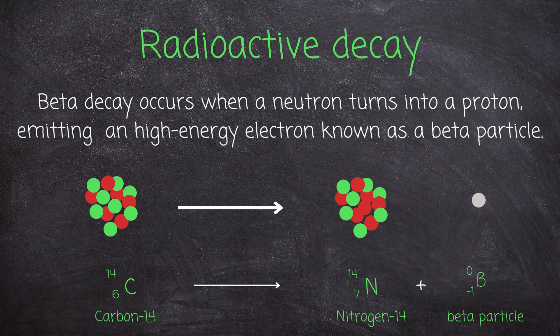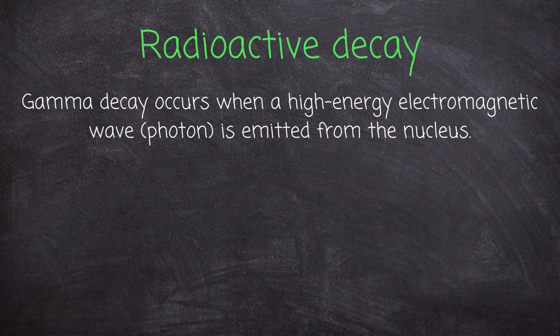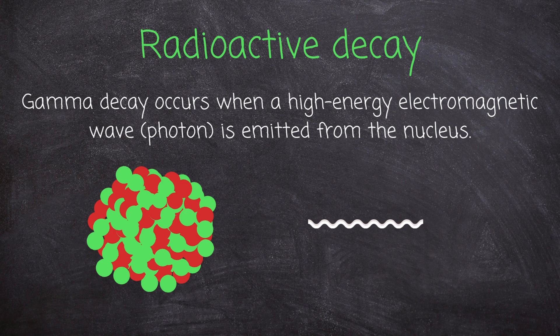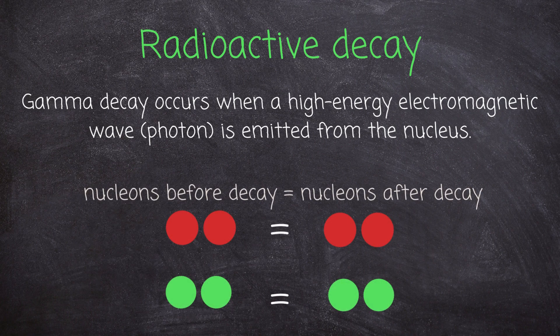Gamma decay occurs when a high-energy electromagnetic wave known as a photon is emitted by the nucleus. During gamma decay, there is no change in protons, neutrons, or mass number. However, an atom goes from an excited state to a relaxed state.